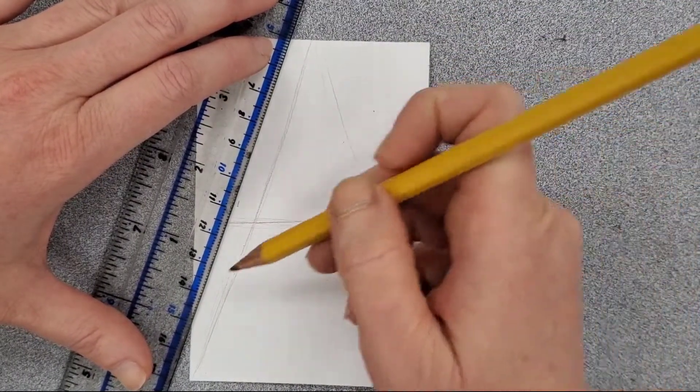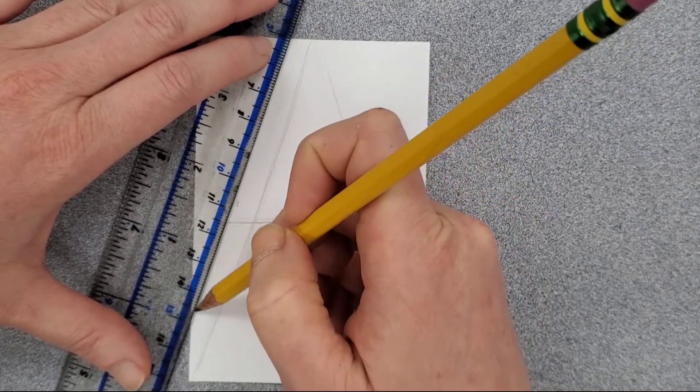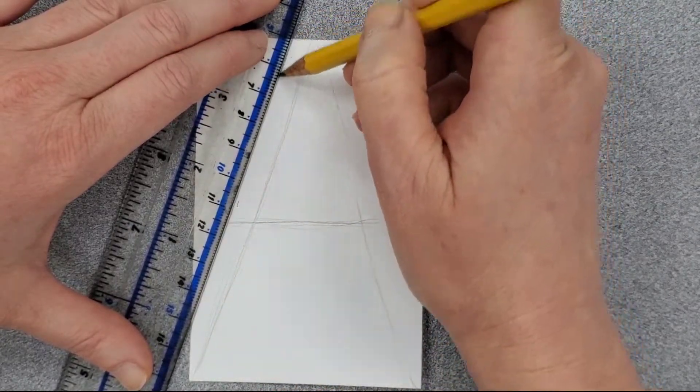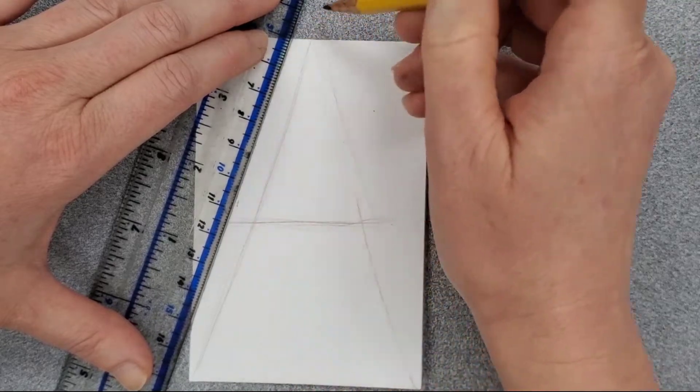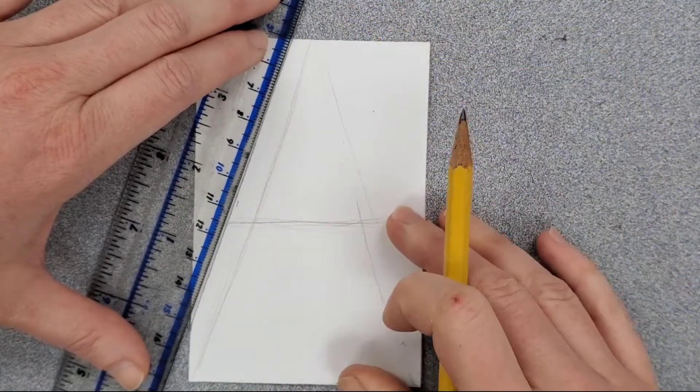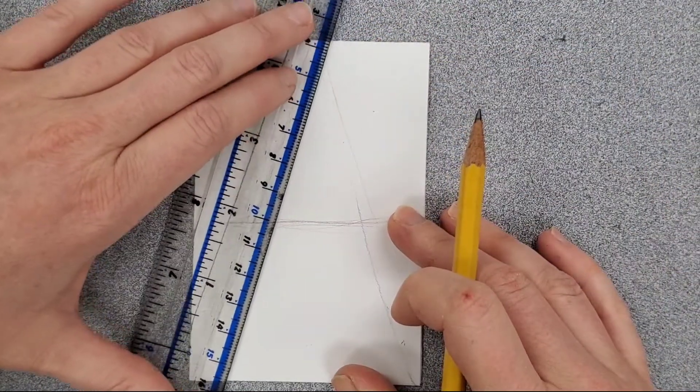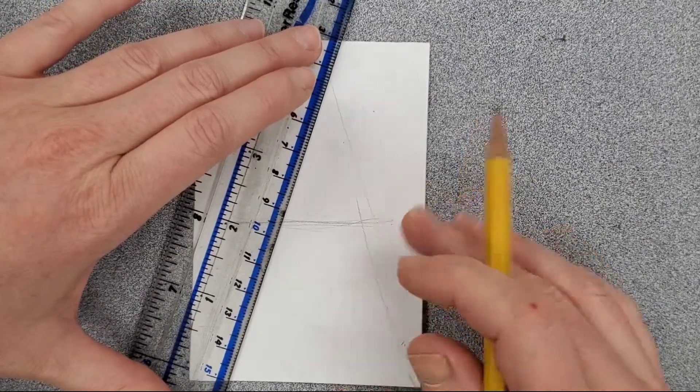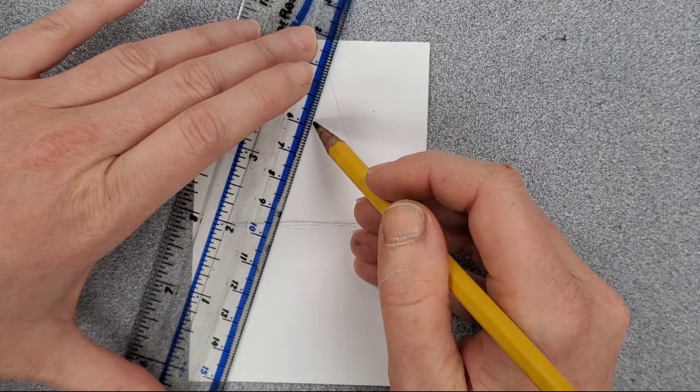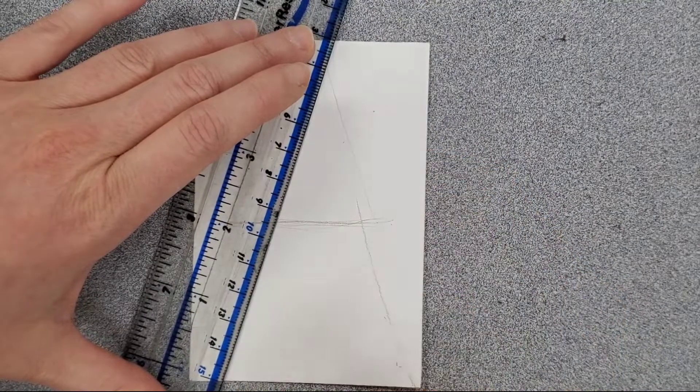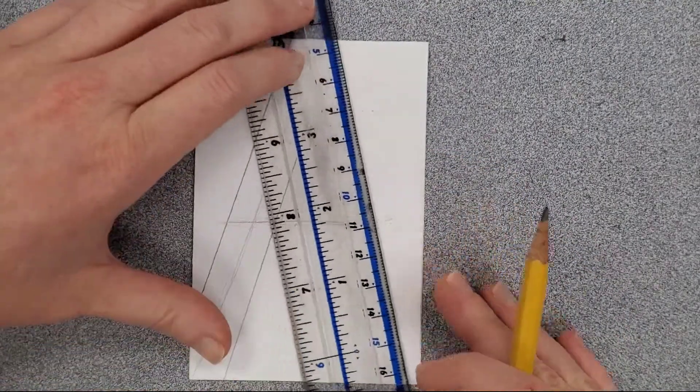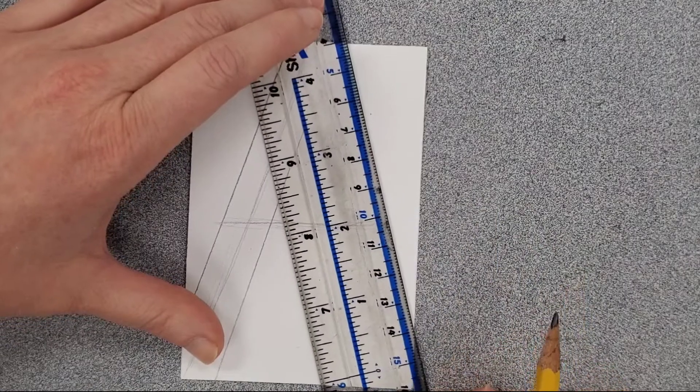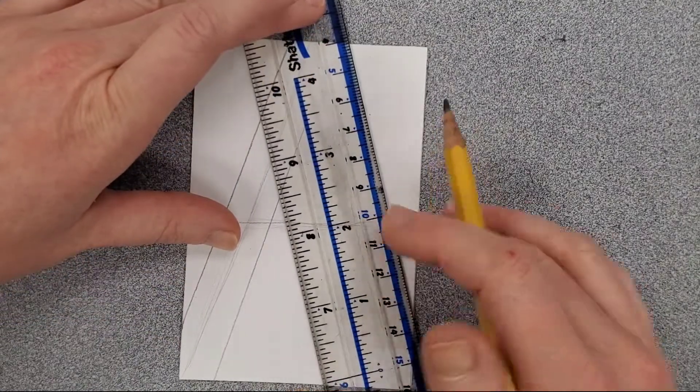So I'm going to go ahead - this is not going to be the best block letter A, but I'm going to attempt to, using my ruler, create even width all the way around my skeleton. I'll line it up, and I like to keep my lines for this light because I make a lot of mistakes when I draw.